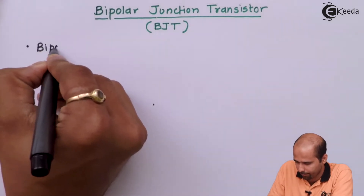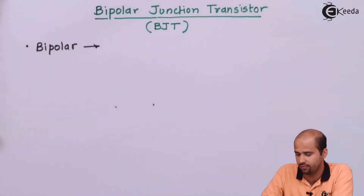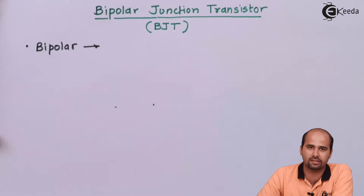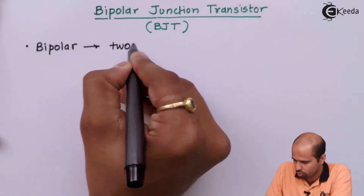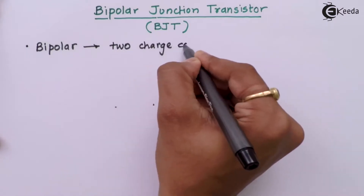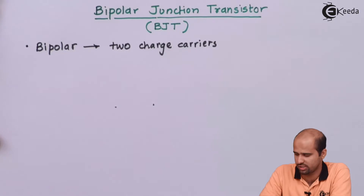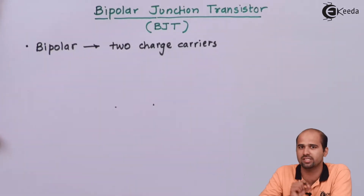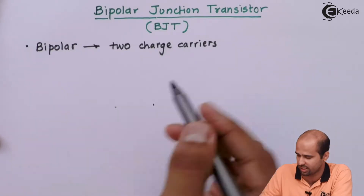The first word is bipolar. Bipolar means we have two charge carriers — one is positively charged and one is negatively charged. These two charge carriers are responsible for the conduction process, and that's why the name is bipolar. Bipolar means two polar, which shows the polarity of the charge carriers: one positively charged carrier and another negatively charged carrier.